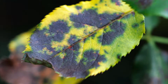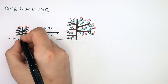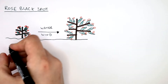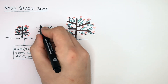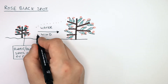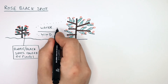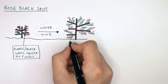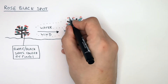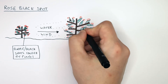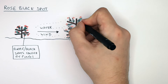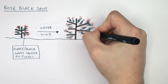Rose black spot is a fungal infection of roses. As the name suggests, there are black spots on the leaves of roses — purple or black spots caused by the fungus. The fungus is airborne and is transmitted from one plant to another via water or the wind. If the fungus comes into contact with another rose plant, that rose plant is then going to be affected with the disease rose black spot.